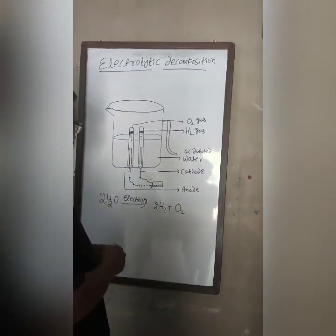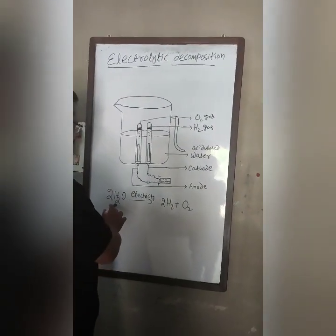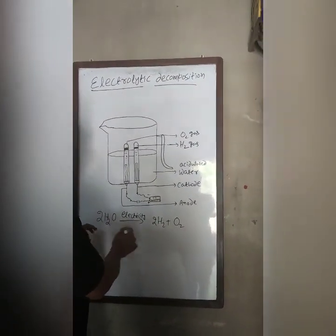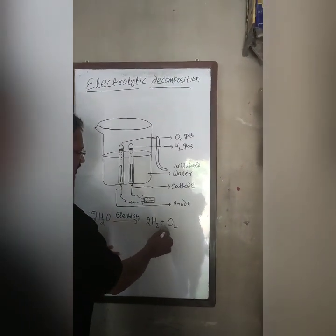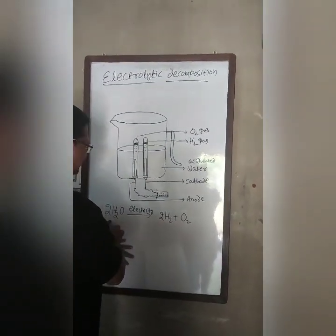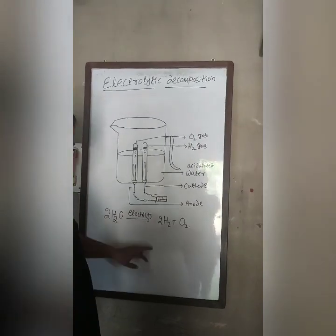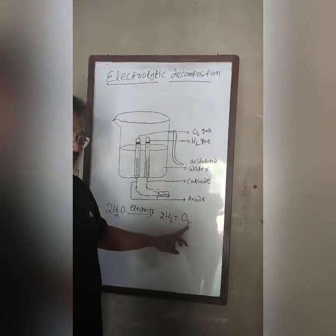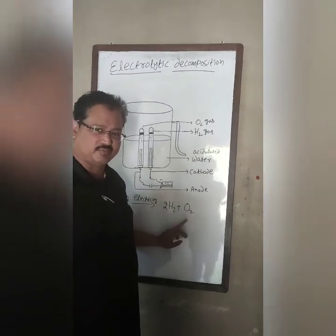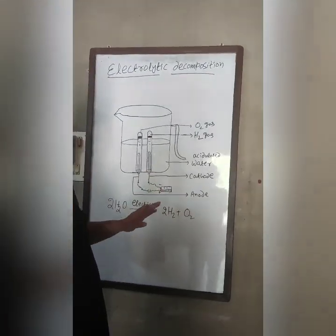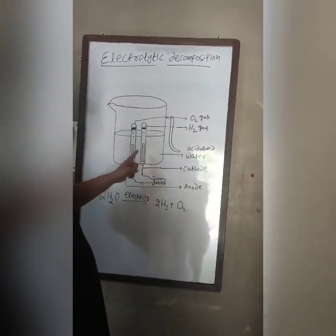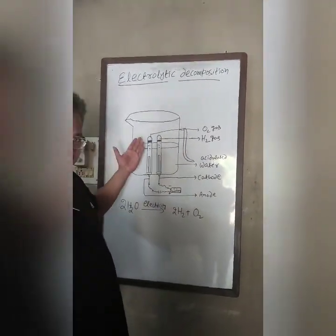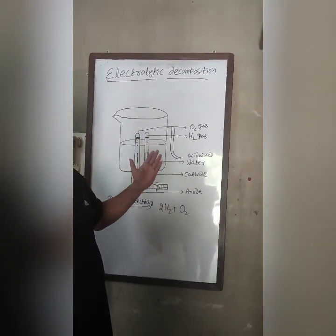This is because when water is electrolyzed, from every two molecules of water, two molecules of hydrogen and one molecule of oxygen are liberated at their respective electrodes. That is why the volume of gas collected at cathode to anode is in the ratio of 2:1.